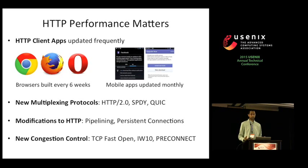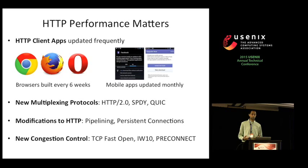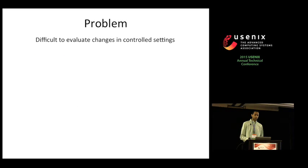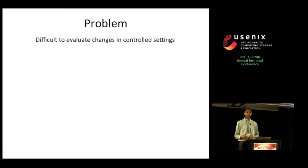While developing each of these changes, it's quite useful to be able to evaluate how that change directly affects application-level performance. For example, a browser developer may want to evaluate how a new JavaScript engine affects web page load times. However, today it's quite difficult to evaluate these changes in controlled experimental settings.